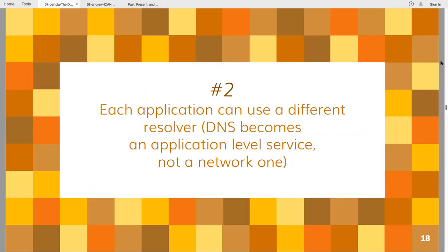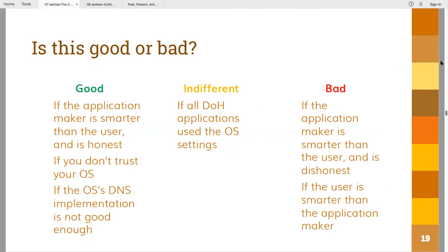The second effect: what happens if we start having applications that each use a different resolver? The argument used — and it's true in some cases — is that the average user may not be smart enough to make a good choice of resolver; they don't even know what a resolver is. So if the application maker is more technical and really wants to do something good for you, they can take care of the resolver choice and pick one providing better service, including more privacy. So if the application is acting in the user's interest, this can actually be good.